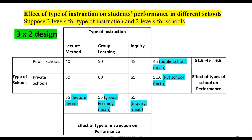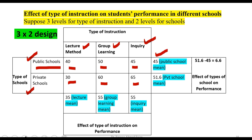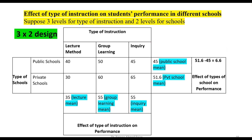The three instruction types are lecture method, group learning method, and inquiry method. The two school types are public and private. The values in the table represent mean performance for each group. The mean for public schools is 45 and the mean for private schools is 51.6. Subtracting these gives 6.6, indicating a main effect due to type of school, though statistical tests are needed to determine significance.